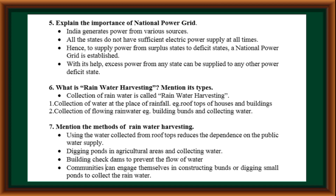What is rainwater harvesting? Mention its types. Collection of rainwater is called rainwater harvesting. Two types: collection of water at the place of rainfall, e.g., rooftops of houses and buildings; and collection of flowing rainwater, e.g., building bunds and collecting water.